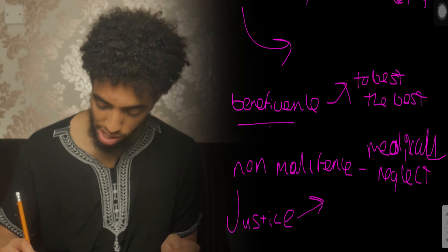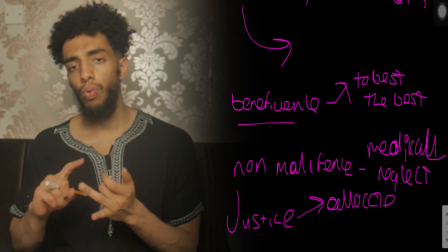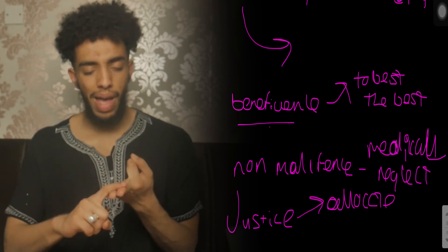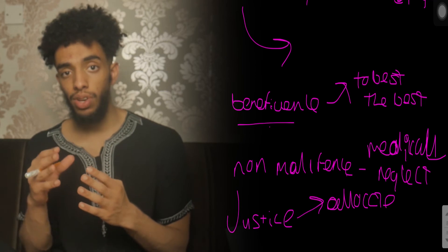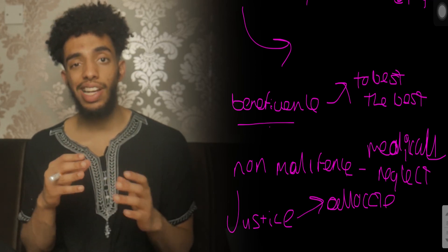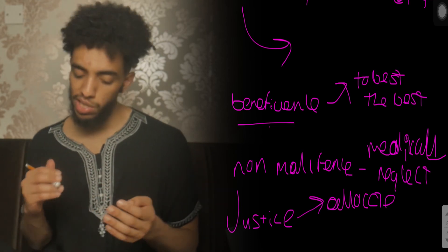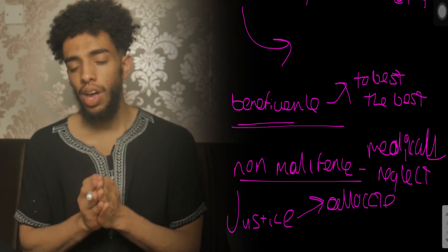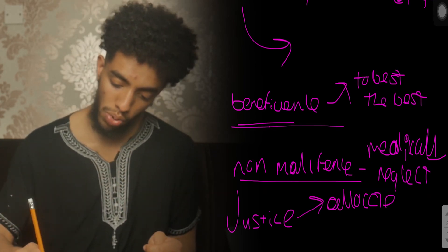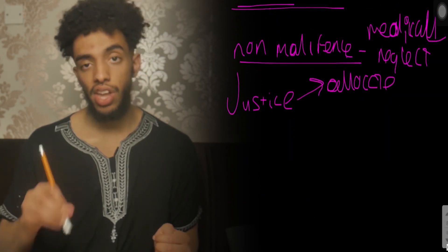The last pillar is justice — you must allocate resources fairly. You don't discriminate on financial, racial background, skin color, or anything else. Any person who takes priority in treatment is one who has a greater clinical need. To summarize, the four pillars are: autonomy, beneficence, non-maleficence, and justice.